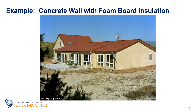So let's think about how a wall is built. We'll use this house as our example. It's a concrete house with foam board insulation and a stucco finish on the exterior. To calculate the total R-value of the wall, we'll zoom in on a specific section to see how these different materials come together.